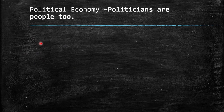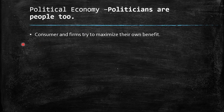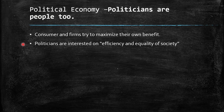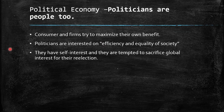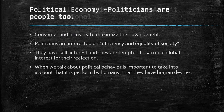Politicians are people too. Consumers and firms try to maximize their own benefits, and politicians claim to be interested in the efficiency and equality of society — but they have self-interest and are tempted to sacrifice global interests for their own election prospects. When we talk about political behavior, it is important to take into account that it is performed by humans with natural human biases and tendencies.